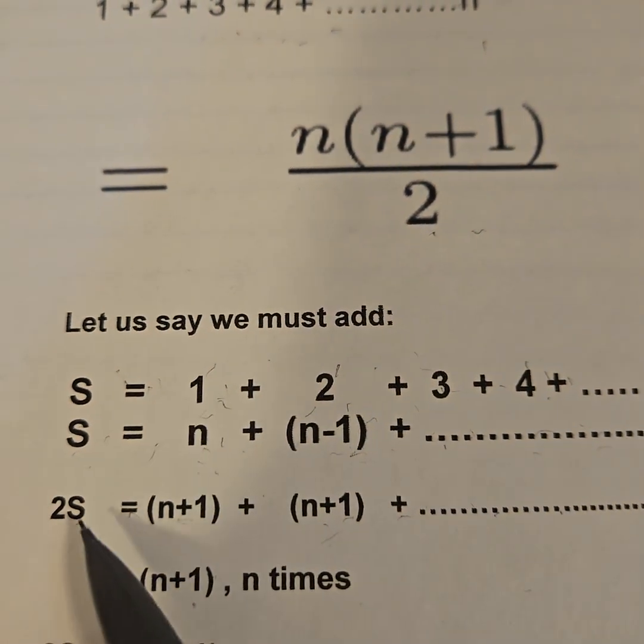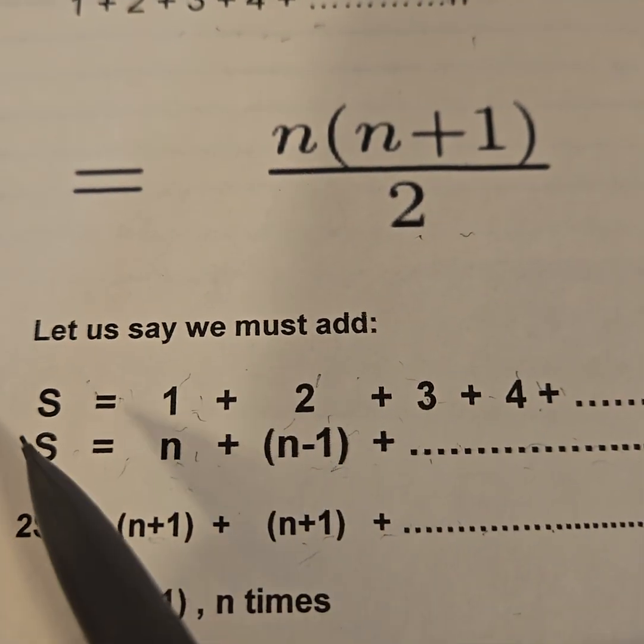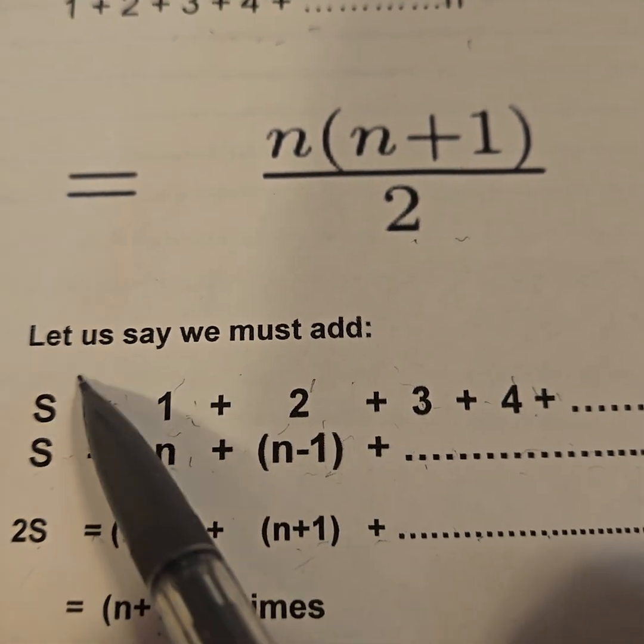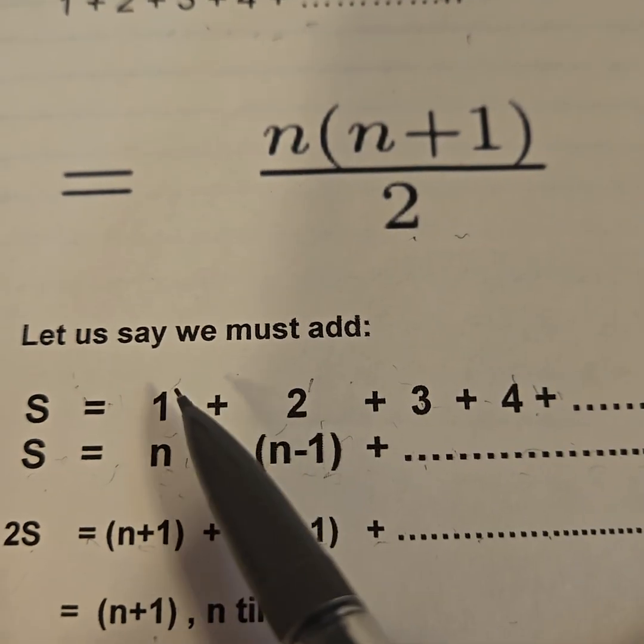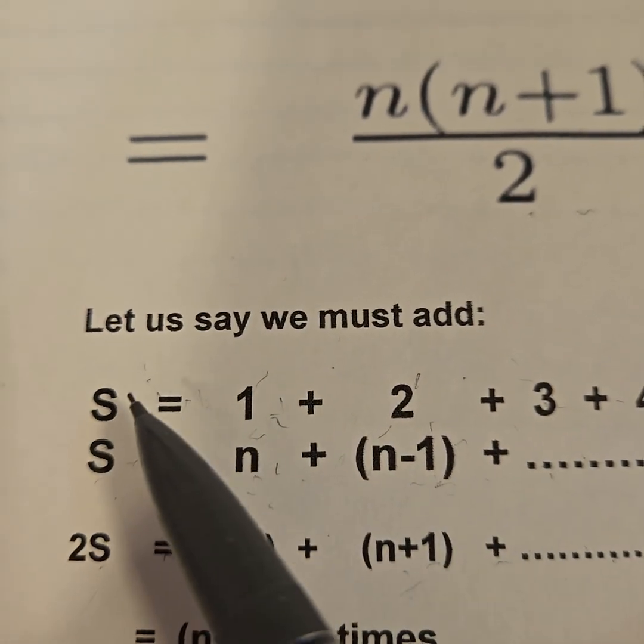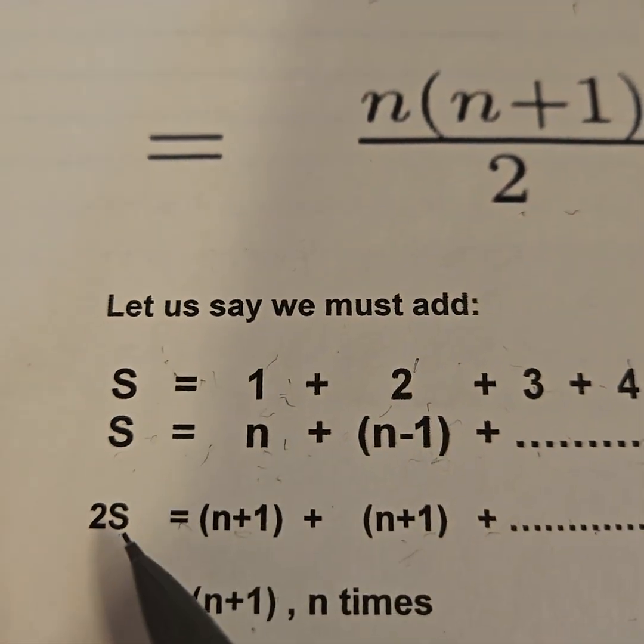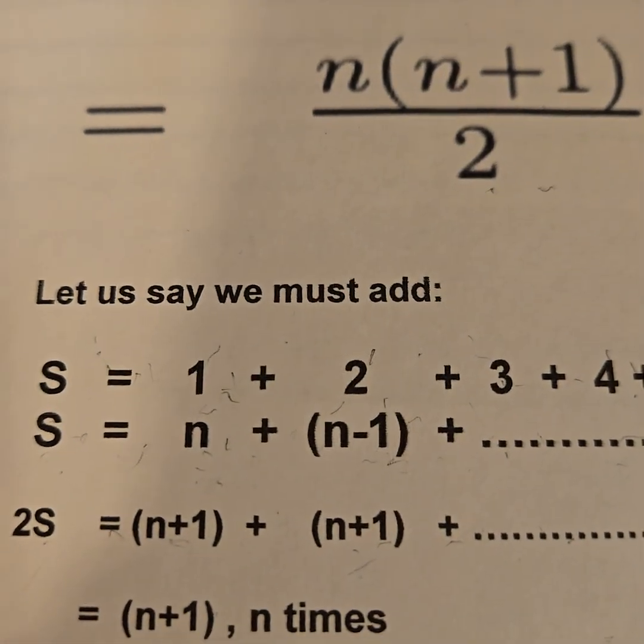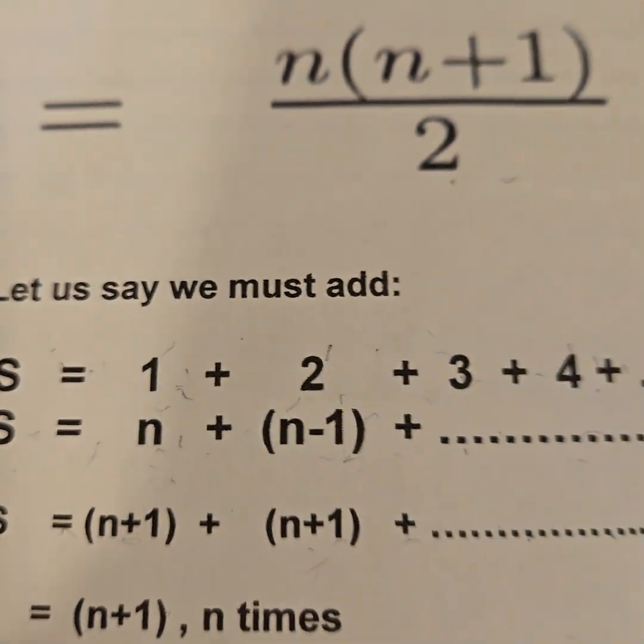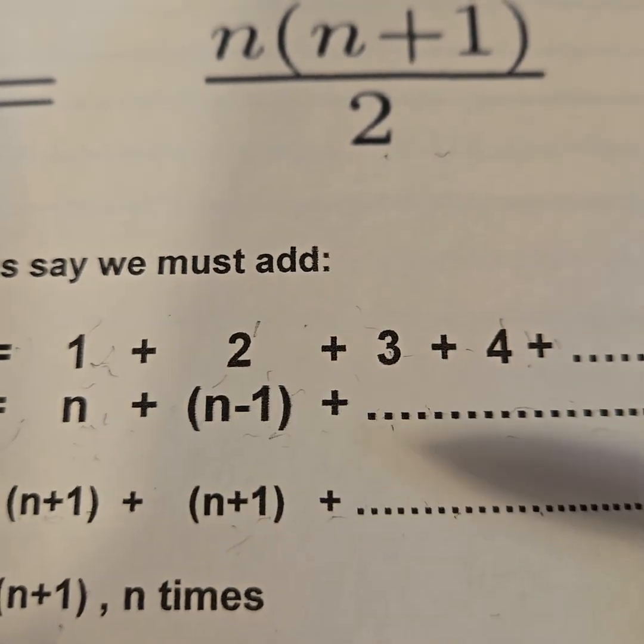The next step, I'm going to add each side of the equation. It's true: if left equals right and left equals right, then left plus left must equal right plus right. So I said let S be the total. S plus S is 2S. Now I'm going to add each term in this number line. 1 + n is n+1.